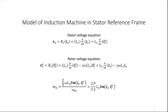Where Is is the stator current, Ir is the rotor current, and Vs is the stator voltage. Similarly, we have the rotor voltage equation: Vr referred to stator equals R2·Ir referred to stator plus L2·d/dt of Ir referred to stator minus j·omega·L2·Ir referred to stator plus L0·d/dt of Is minus j·omega·L0·Is.